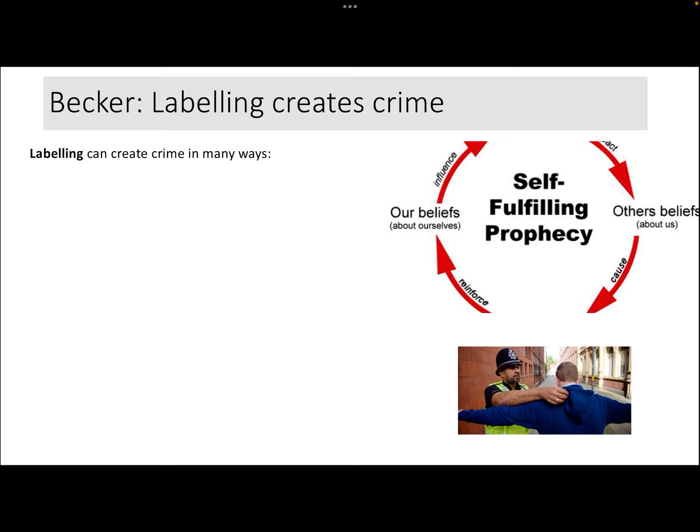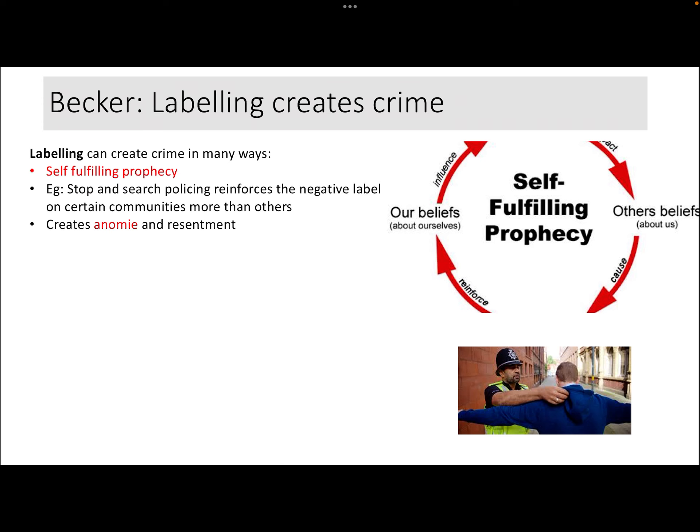This leads us to the idea of labelling. Howard Becker is the guy behind labelling theory — you may have come across it in education as well. Becker argues that labelling is enormously powerful and can actually create crime in different ways. The most familiar would be the self-fulfilling prophecy. Effectively, the way other people see us — others' beliefs about us — can have a huge impact. If people act and treat us as if we are one thing, quite often we will start to believe that and think, actually, I am that person. Other people's beliefs about us become our reality, our self-identity.